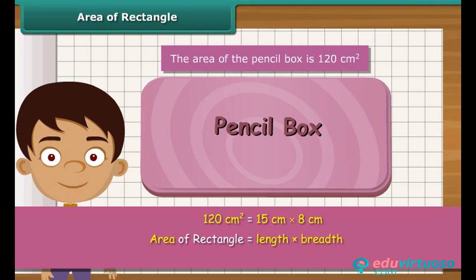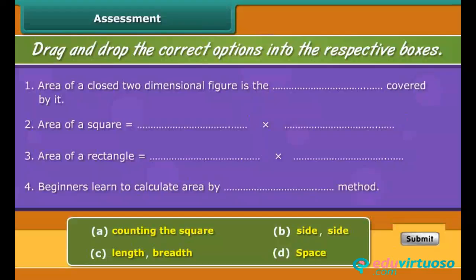Since a square is a rectangle whose length and breadth are equal, the area of a square is obtained by multiplying its side and side. It is time to check your understanding.